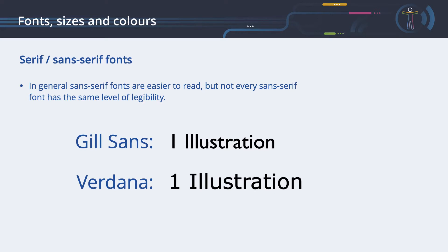But not every sans serif font has the same level of legibility. Let's look at the following example displayed using a Gil Sans font. Gil Sans is sans serif, so it should be easy to read. As you can see in the example of the text '1 illustration', the number 1, the uppercase I, and the lowercase L all use the same shape for different characters. Comparing this to Verdana, the single characters are much easier to distinguish.